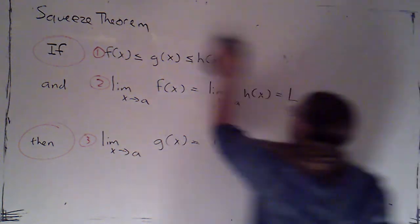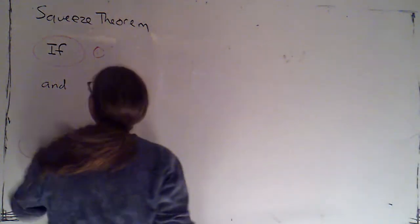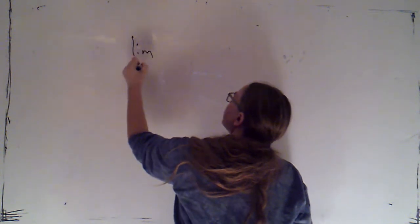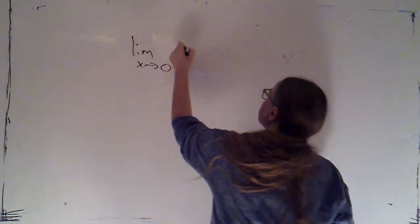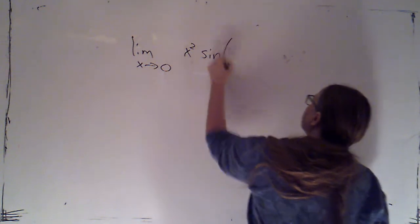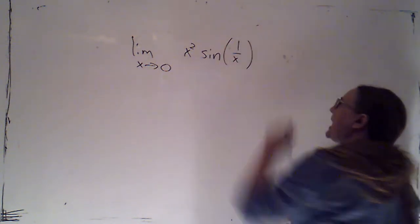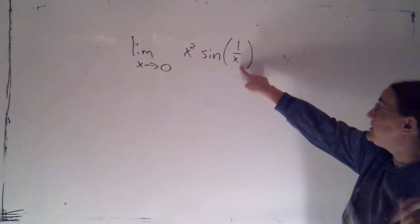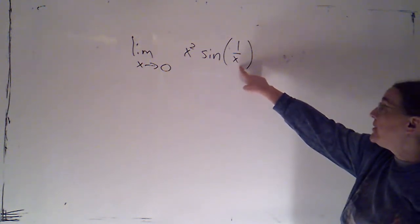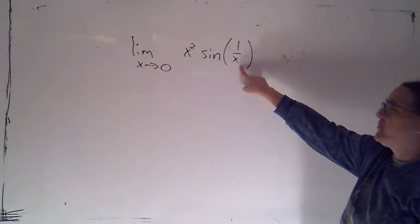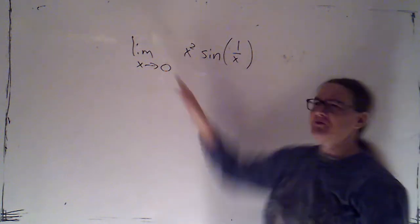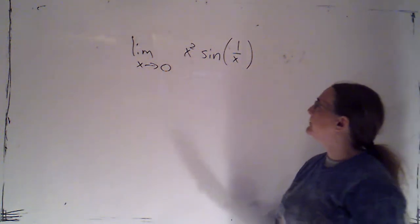So how would we need to use this? Let's suppose I want to evaluate the limit as x goes to zero of x² times sine of 1/x. I know I cannot simply plug in zero, because 1/x is not defined at zero. So even though this function is continuous on its domain, zero is not in the domain, and I can't just plug in.